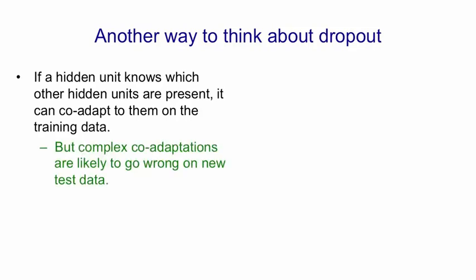Now that's going to cause complex co-adaptations between the hidden units. And these are likely to go wrong when there's a change in the data. So on new test data, if you're relying on a complex co-adaptation to get things right on the training data, it's quite likely to not work nearly so well on new test data.